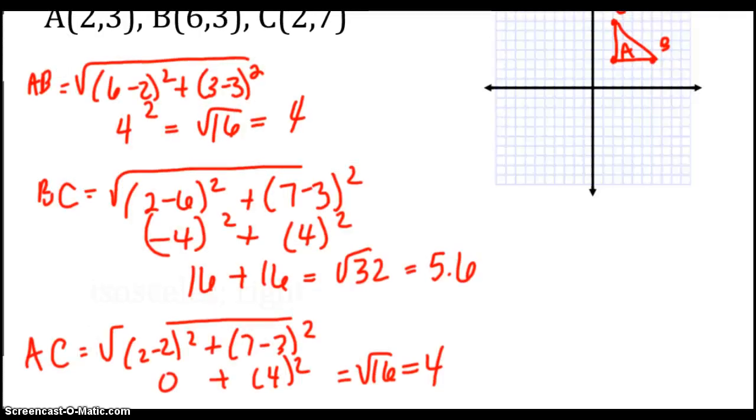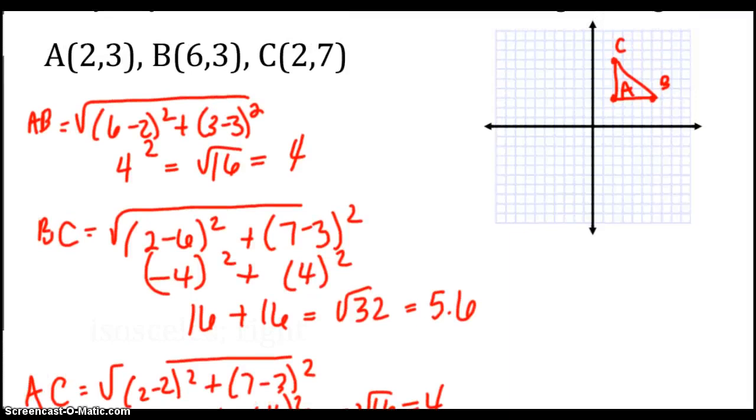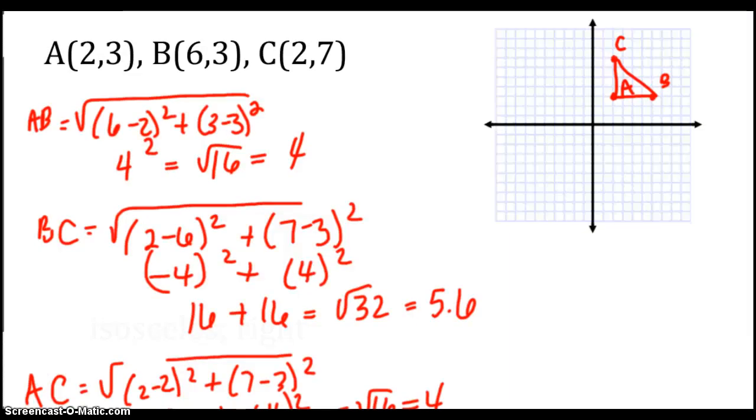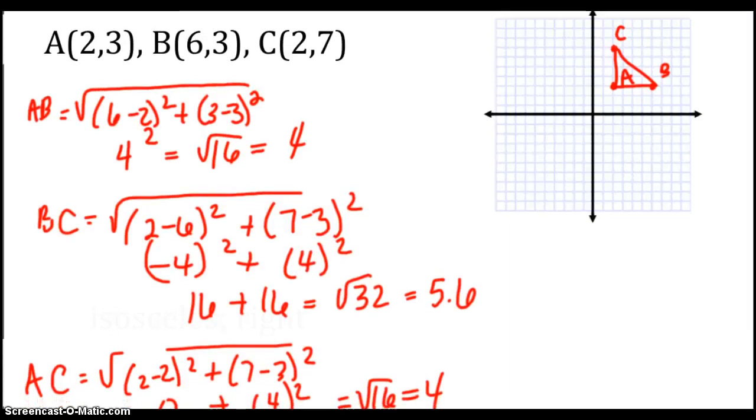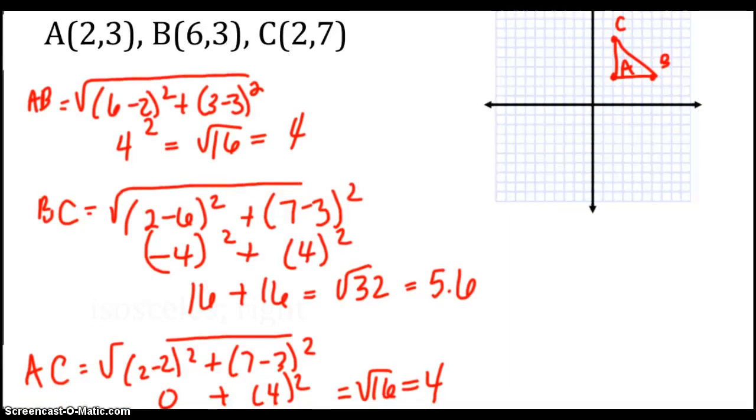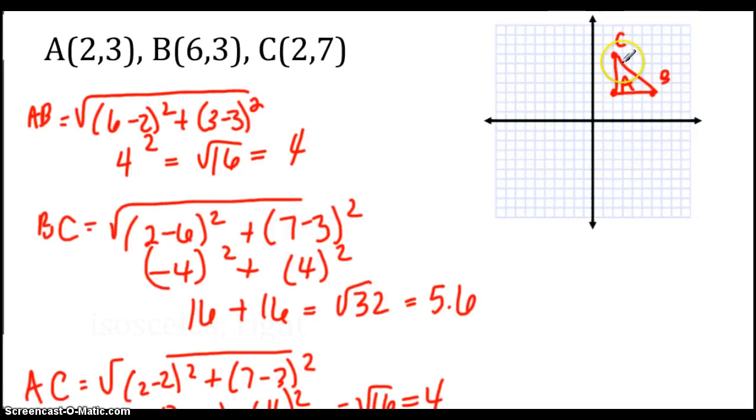I'm hoping that you did pause the video and try this by yourself. I get the square root of 16, which is 4, the square root of 32, which is 5.6. This guy ends up being 4. Then I do AC, and then I get that this is also 4. So if I have a triangle that has two sides the same, it's what type? Hopefully you realize it's isosceles. So this triangle is isosceles.